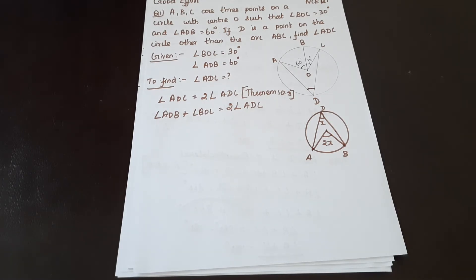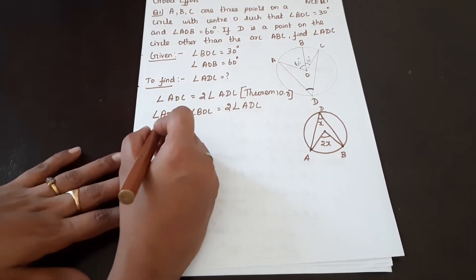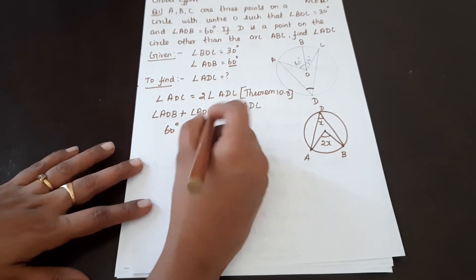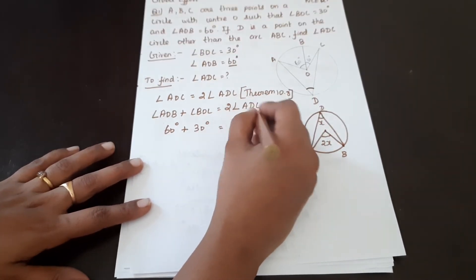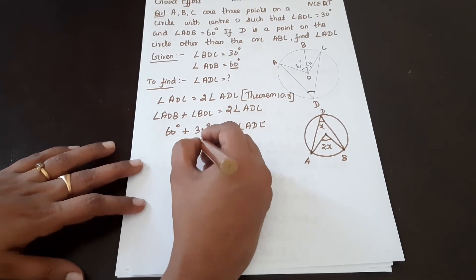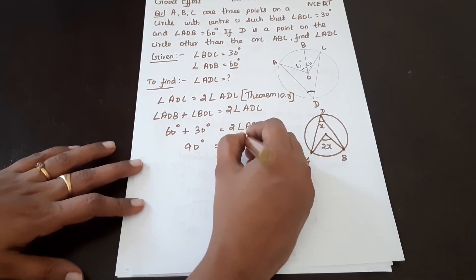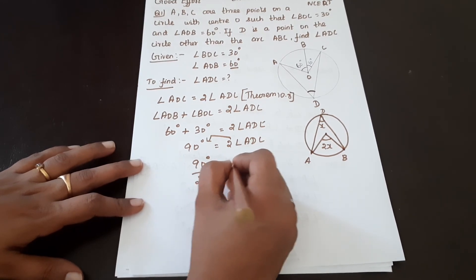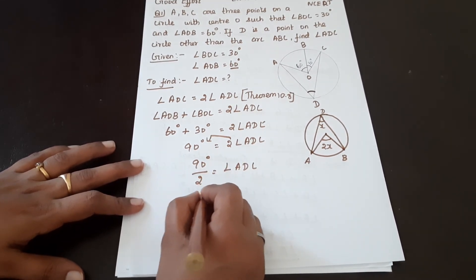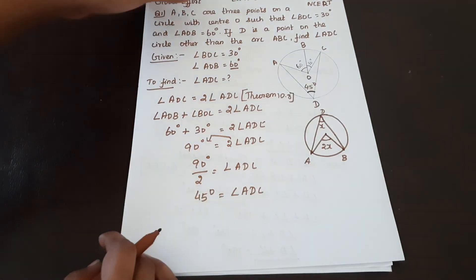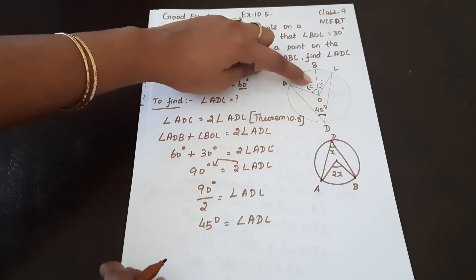Angle AOC is equal to angle AOB plus angle BOC. Angle AOB is equal to 60 degrees, and angle BOC is equal to 30 degrees. So 60 degrees plus 30 degrees equals 90 degrees. Twice the angle ADC equals 90 degrees, so angle ADC equals 90 divided by 2, which is 45 degrees. Therefore angle ADC equals 45 degrees.